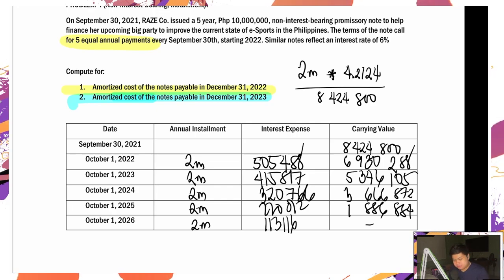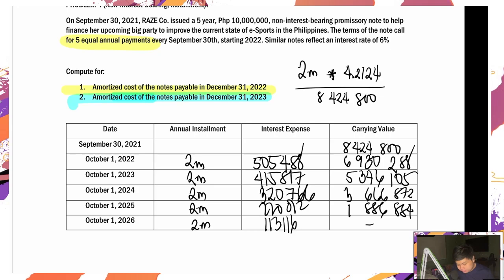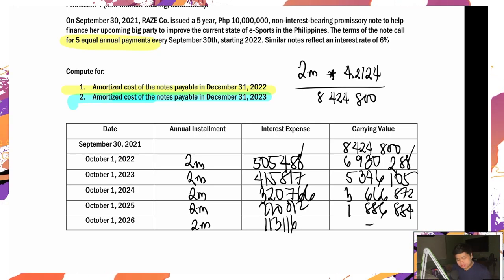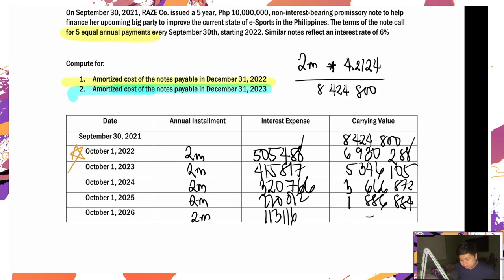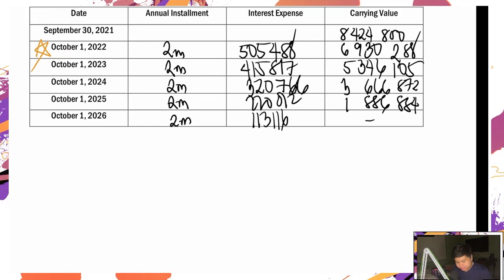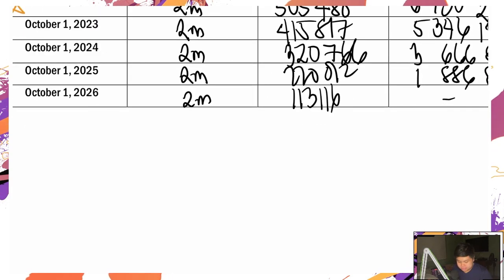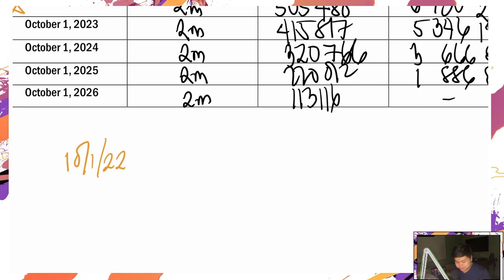Amortized cost of the note on December 31, 2022. Pwede ako kumapit dito — October 1, 2022, anong carrying value? 6,930,288. So October 1, 2022, ito ay 6,930,288.